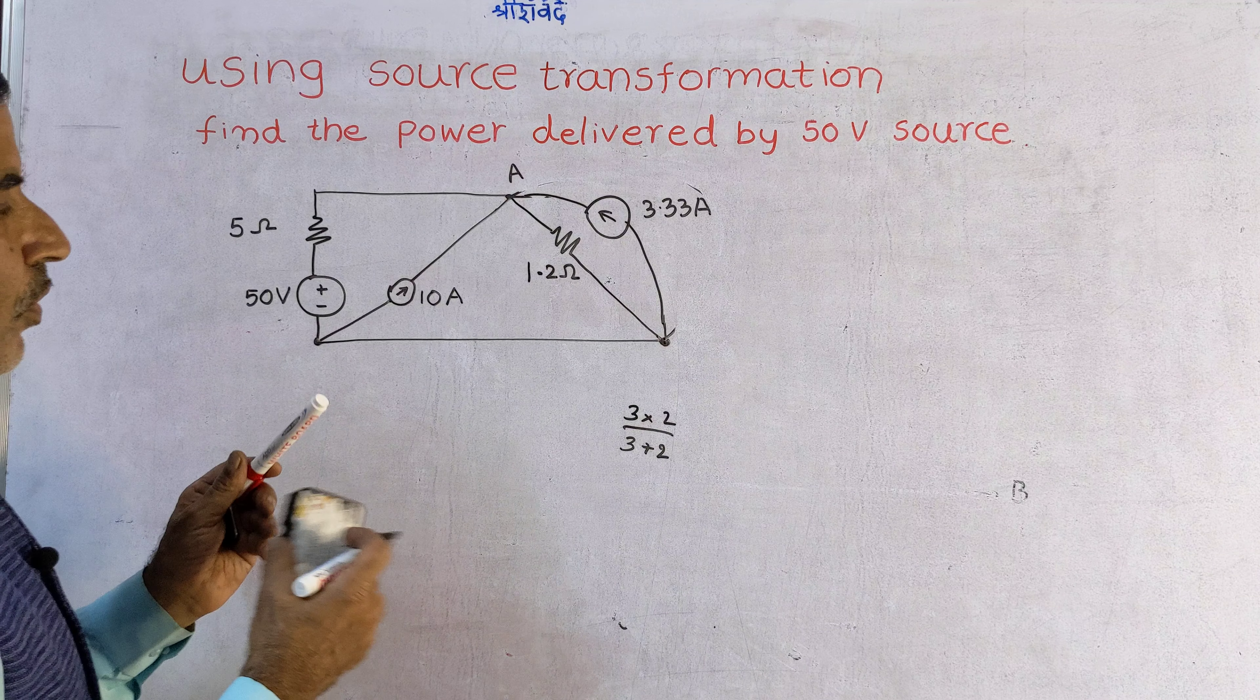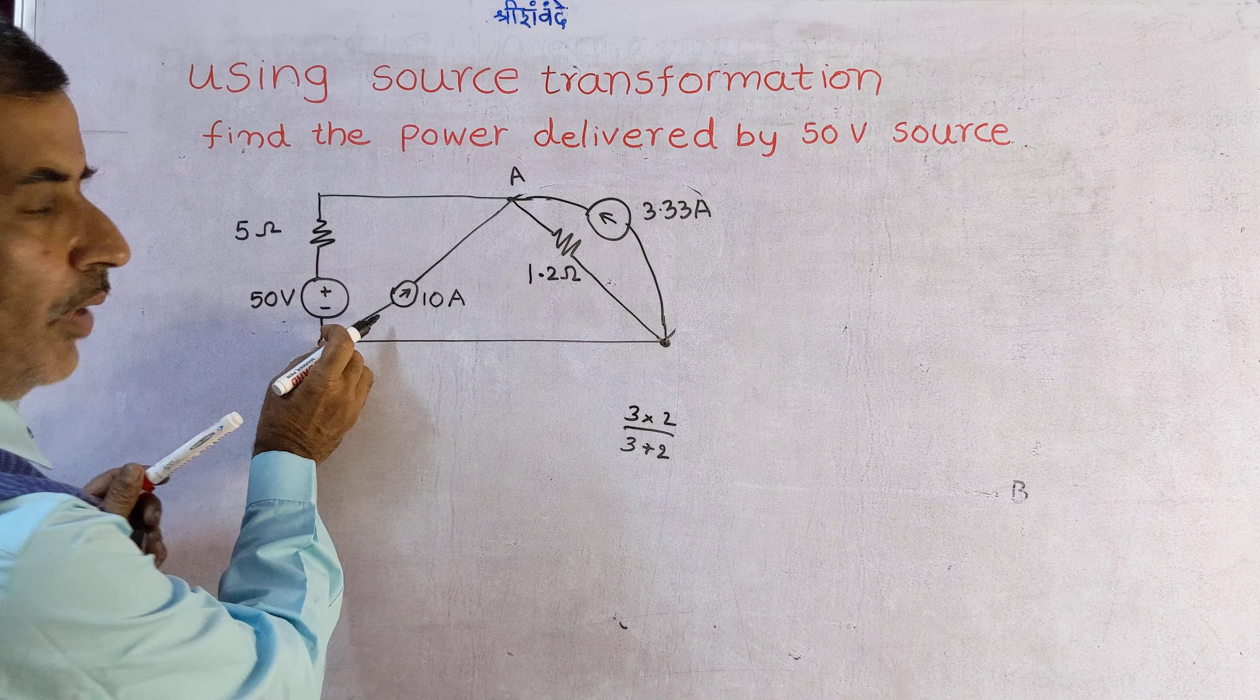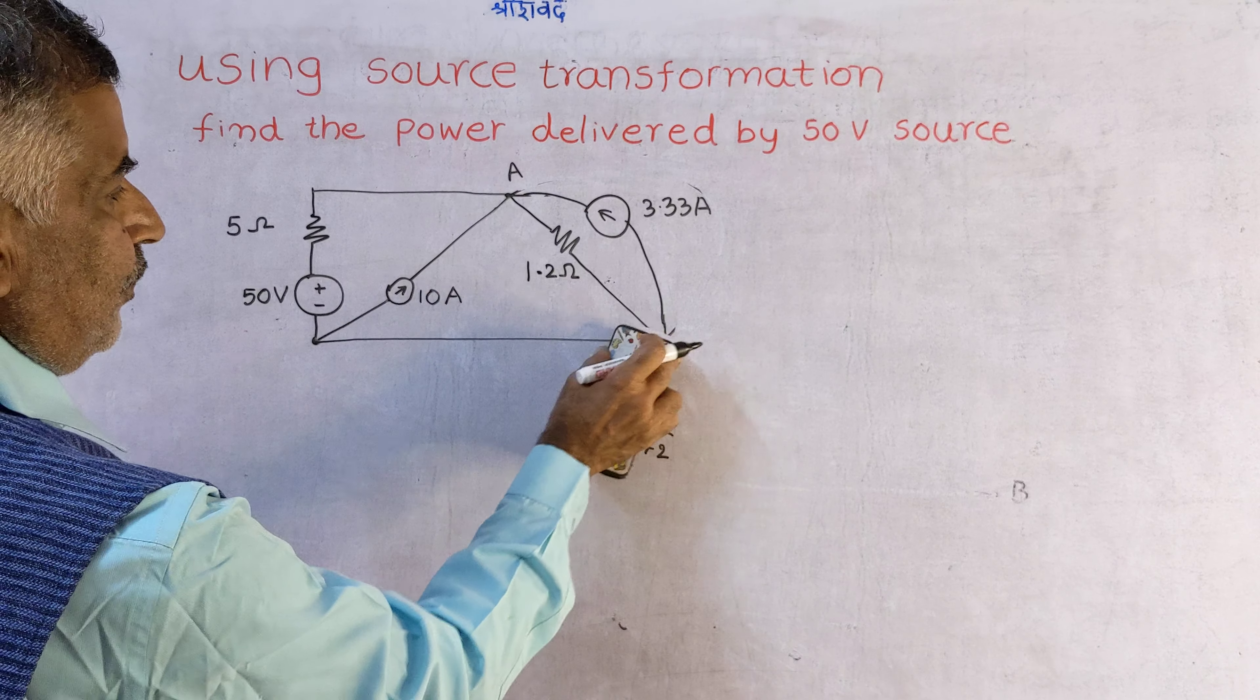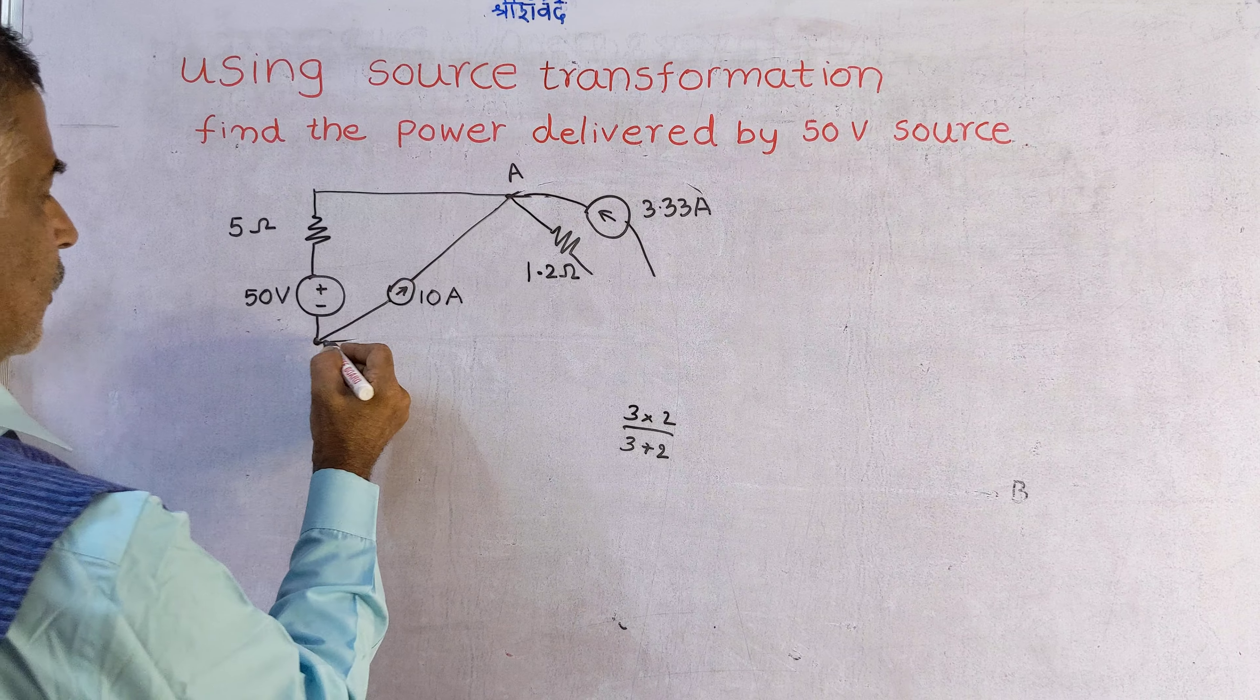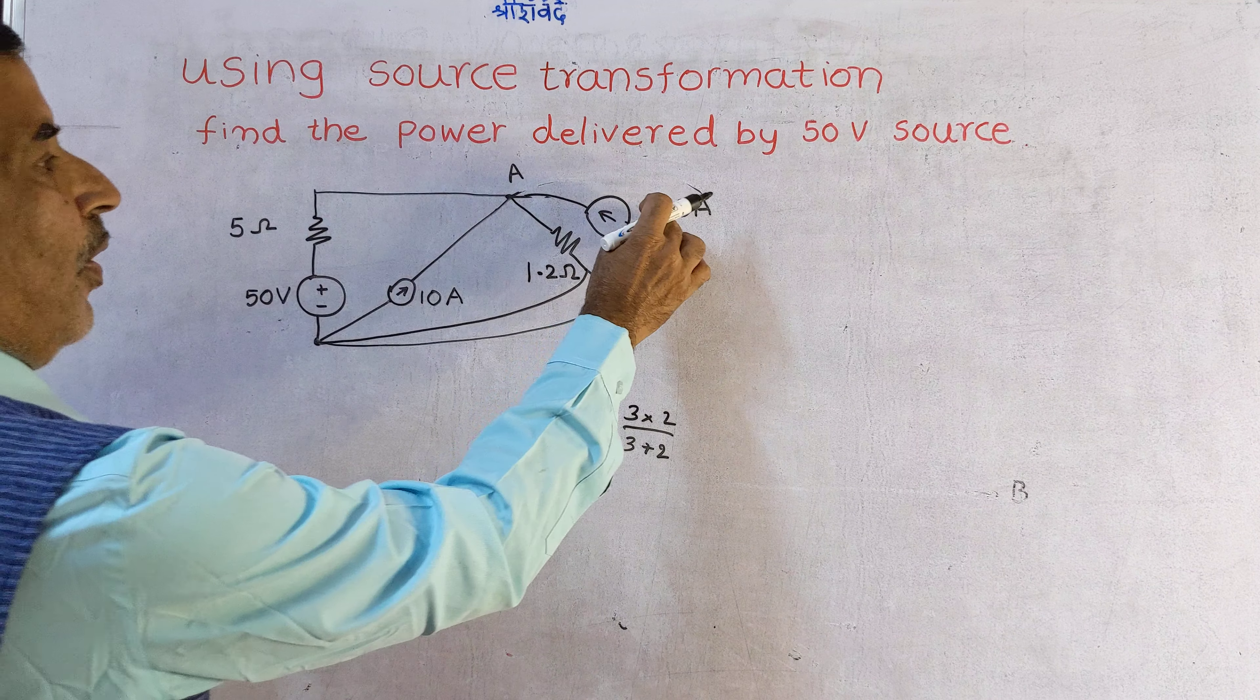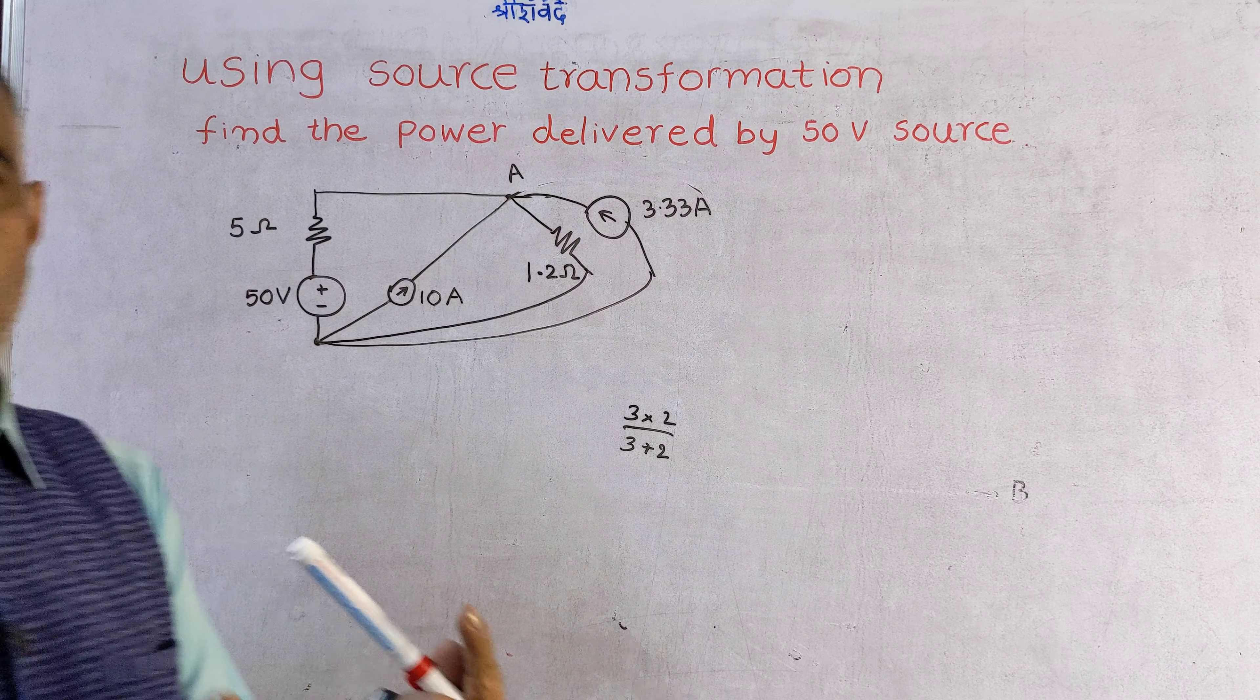You can, to avoid confusion, bring this here because this is short circuit. Therefore what I will do is I will connect this to here. 3.33 in parallel with 10 and both are pointing in the upper direction, therefore they can be added. So it becomes 13.33 amperes, 1.3 ohms.